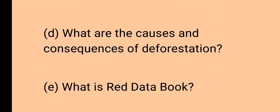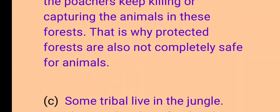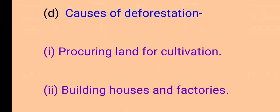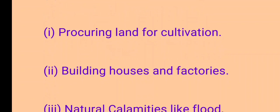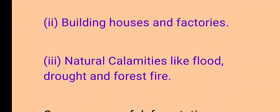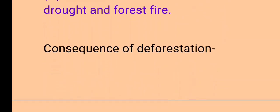Question 5, D: What are the causes and consequences of deforestation? Causes of deforestation: First, clearing land for cultivation. Second, building houses and factories. Third, natural calamities like floods, droughts, and forest fires can also cause deforestation.